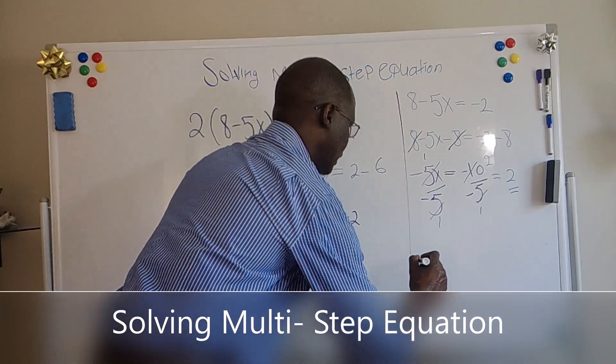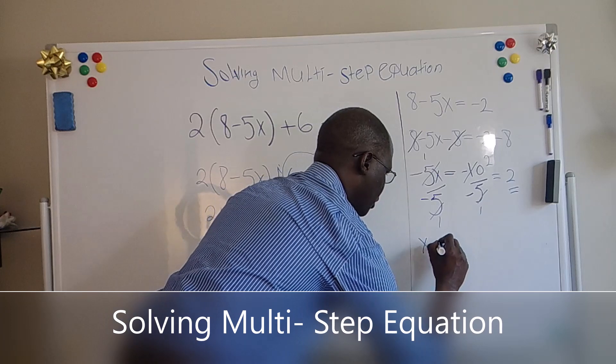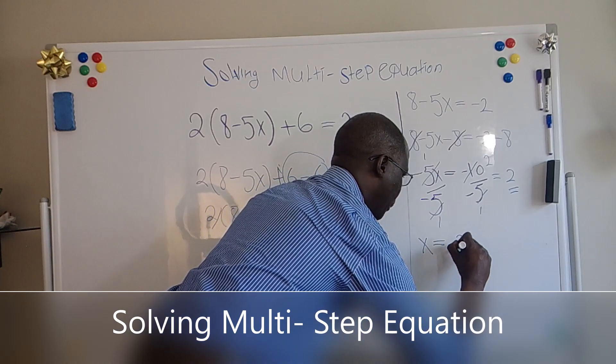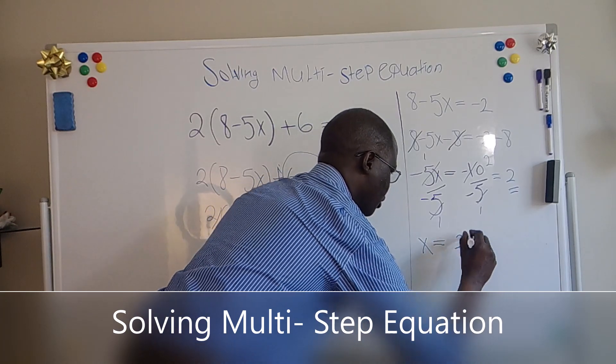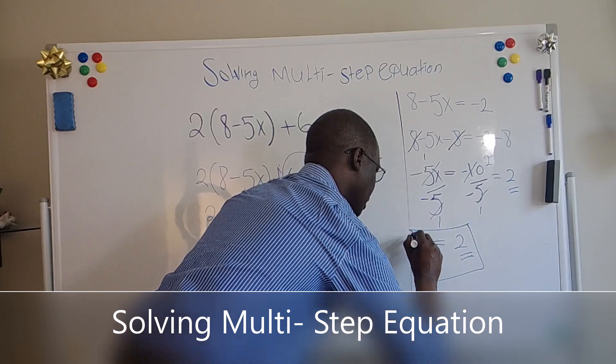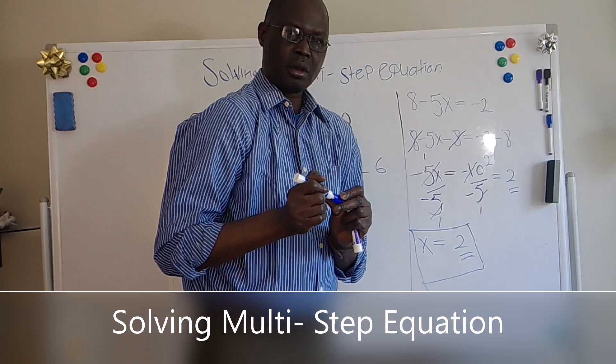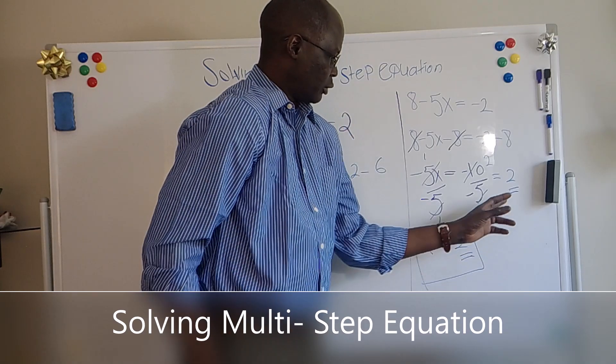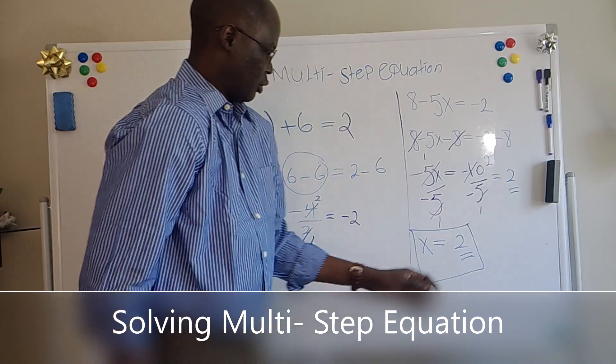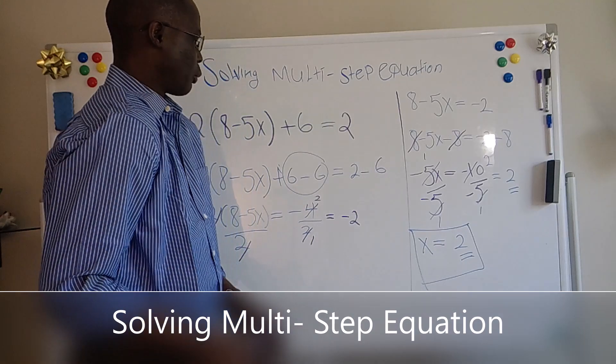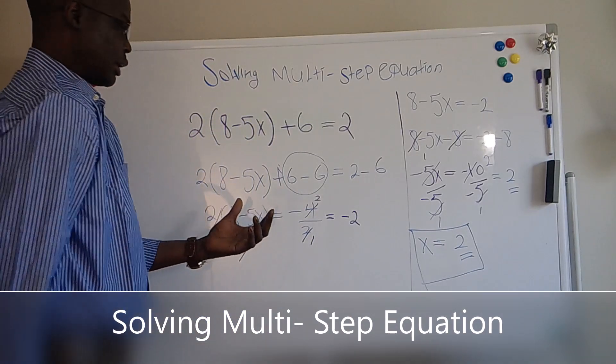So X equals positive 2. And the reason when you divide it minus to minus is always equal to positive. And that's what we have today. So let's get back again.